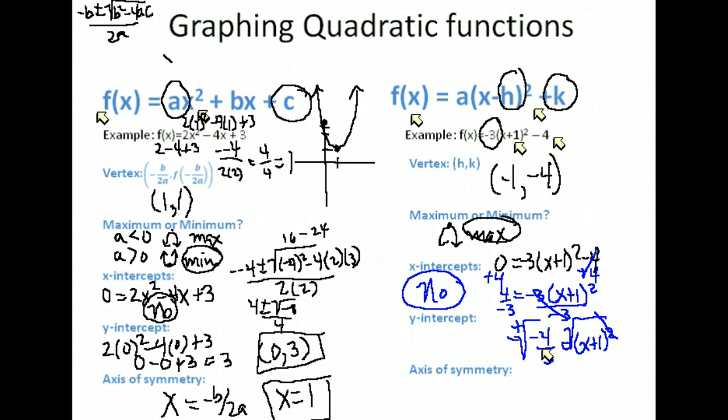So, y-intercepts, again, is fairly easy to find as long as you're very careful with your math. We want to just go ahead and put 0 in for your x value and then very carefully evaluate it. So, 0 plus 1 would be 1. Make sure you follow the order of operations. 1 squared is 1 times negative 3 is negative 3 minus 4 gives me negative 7. So, my y-intercept is at the point where x is 0 and y is negative 7. The last thing is the axis of symmetry, which again is x equals the x-coordinate for my vertex, which was negative 1.